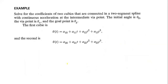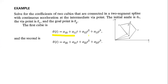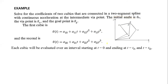Let's take another example: solve for the coefficients of two cubics connected in two segments with continuous acceleration at the intermediate waypoint. The initial angle is theta_0, the waypoint is theta_v, and the goal is theta_g. The cubic equation for the first path has time limit 0 to t_f1, and the cubic equation for the second path has time limit 0 to t_f2.